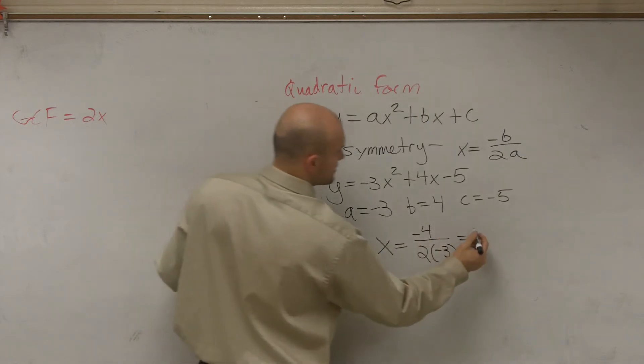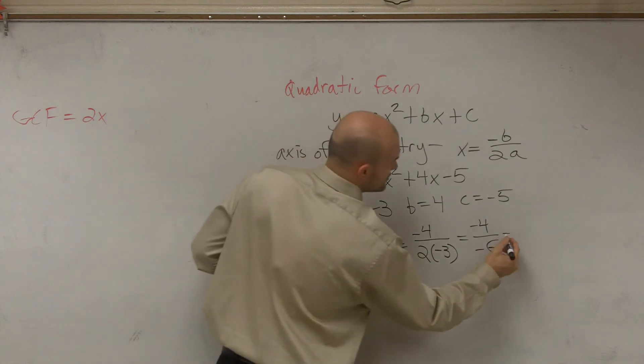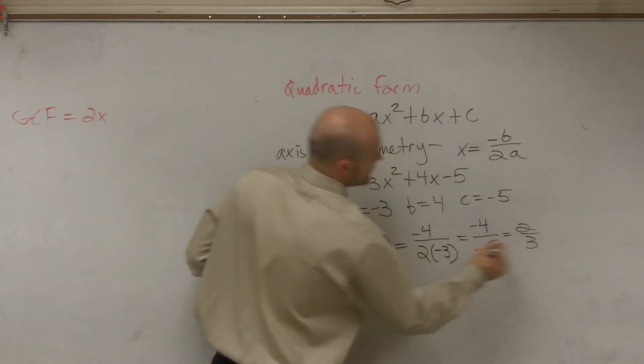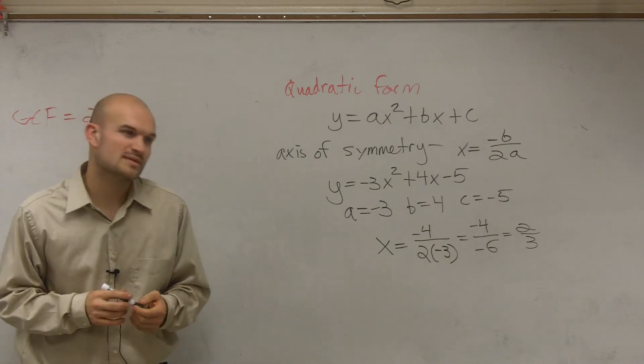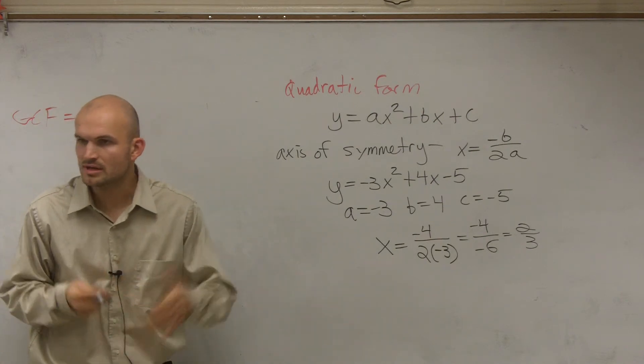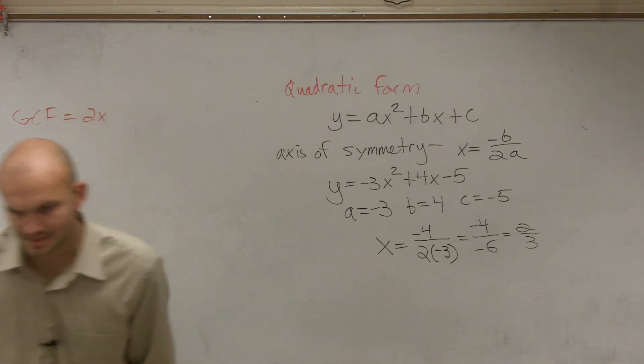So then we can simply reduce that. So negative 4 over negative 6 reduces down to a positive 2 thirds. Sometimes you'll have fractions, sometimes you'll have whole numbers. But that's going to be your axis of symmetry, or at least how to find it. We'll talk about where the axis of symmetry comes in.